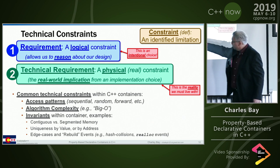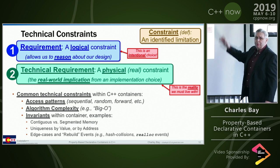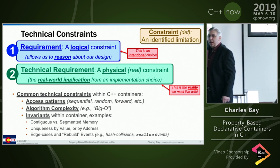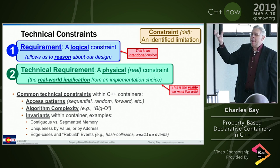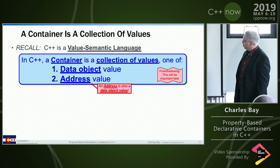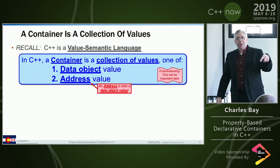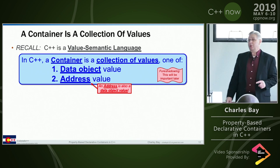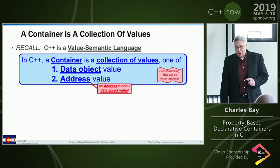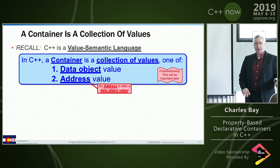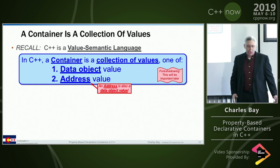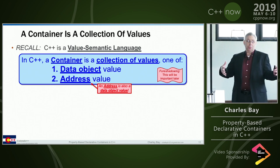These technical implications become the criteria by which we judge whether a container is suitable for its purpose. Access patterns, algorithm complexity, invariants of the container - we deal with that every day. The requirement is functional, and the technical implication is the physical constraint. It's a container, a collection of values. C++, C, and Rust are value-type languages. Pretty much none of the others - they're all reference-type languages. All the STL containers are based on values.